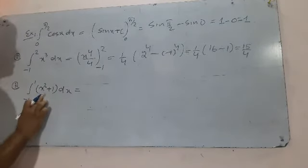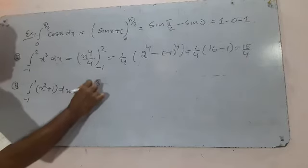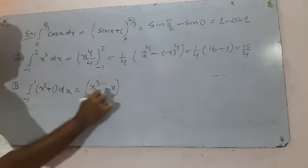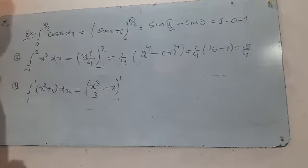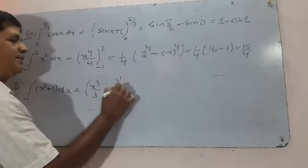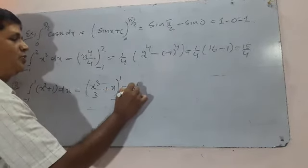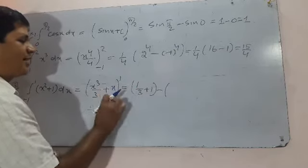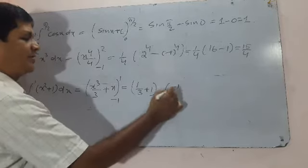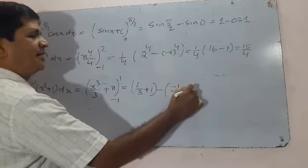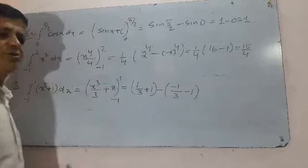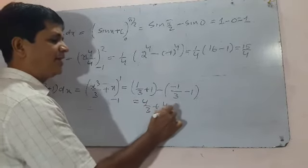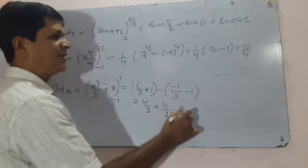For part (c), there are two terms: the integration of x² is x³/3, and the integration of 1 dx is x. Evaluated from -1 to 1: put x = 1 to get 1/3 + 1, minus putting x = -1 to get -1/3 - 1. This gives 4/3 + 4/3 = 8/3.